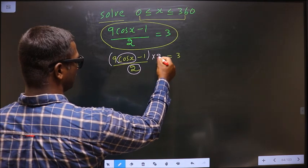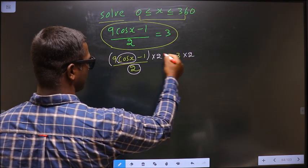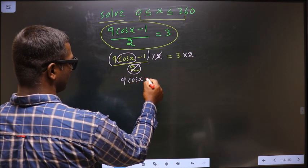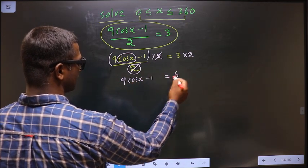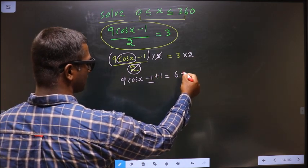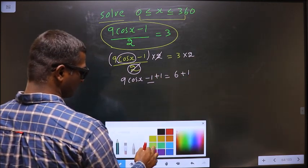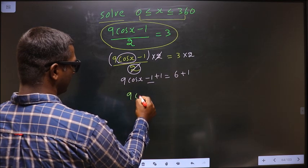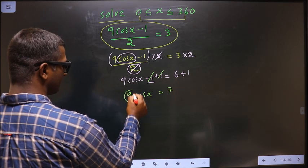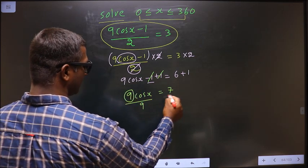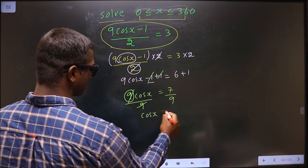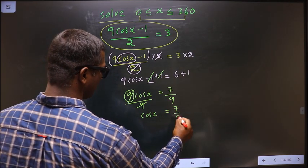Now to remove -1, add 1 on both sides. We get 9cos(x) = 7. Now to remove 9, divide by 9. So we get cos(x) = 7/9.